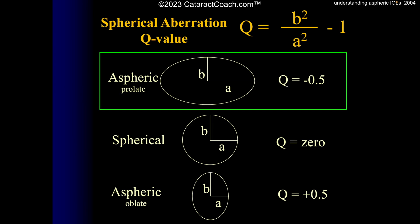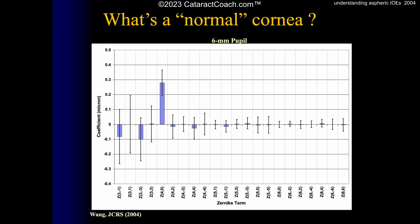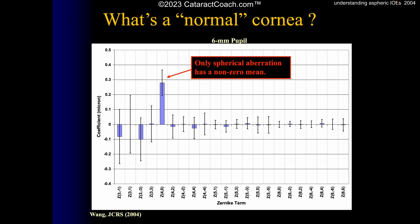Let's talk about ocular aberrations. The Q value describes the spherical aberration profile. A prolate aspheric lens is what we want; spherical is in the middle; and oblate aspheric is the other extreme. A normal cornea actually has a mild amount of positive spherical aberration. Looking at a study published by Wong about 20 years ago on young healthy LASIK patients, all Zernike terms were measured — and the only one with a non-zero mean is spherical aberration, meaning young healthy corneas have some positive spherical aberration, approximately 0.25 microns.